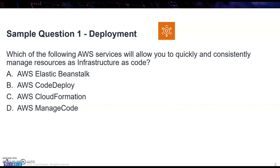The answer is C — CloudFormation. CloudFormation allows you to quickly and consistently manage resources as infrastructure as code. With CloudFormation you can create templates written in either YAML or JSON, and in those templates you can specify, for example, if you want to create three EC2 instances inside a VPC and give them a security group, you can do that with CloudFormation.